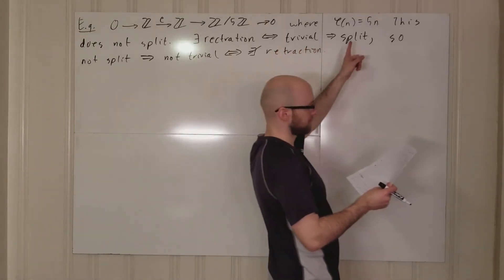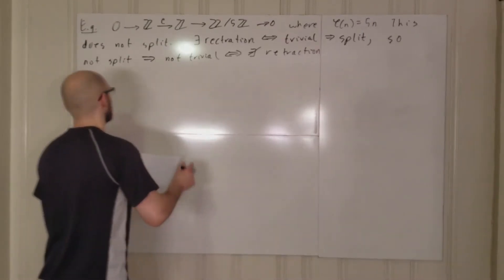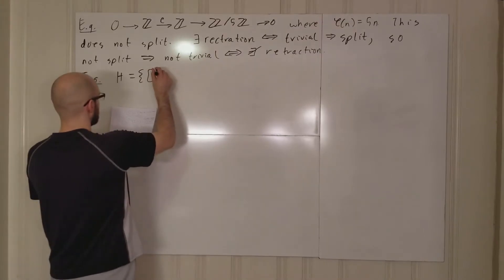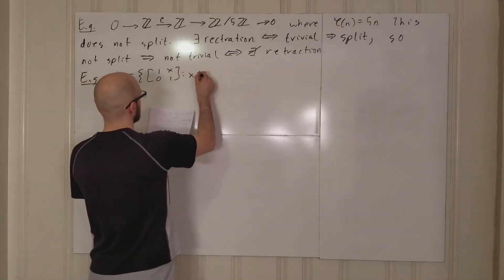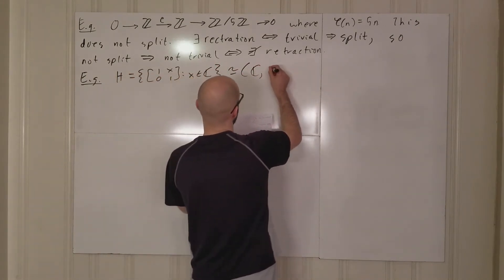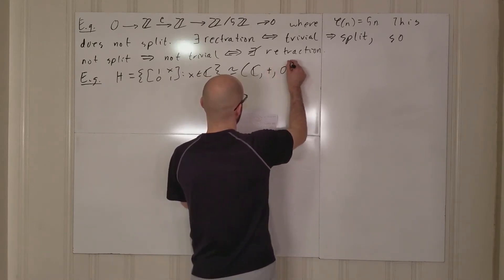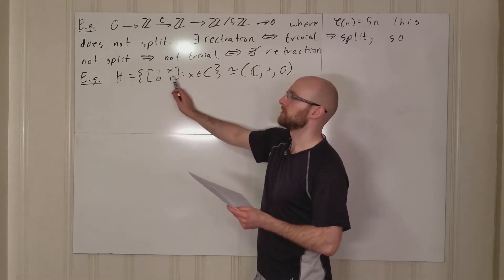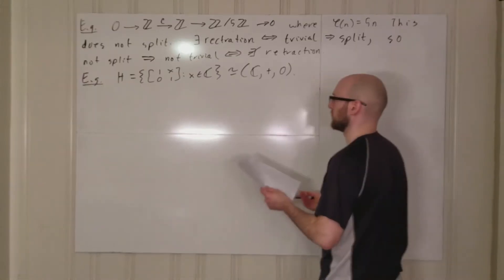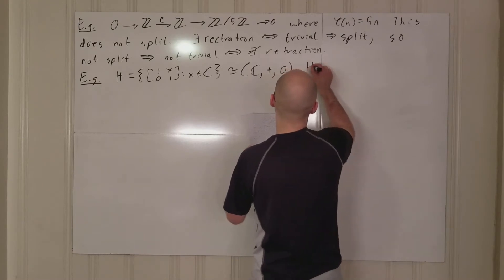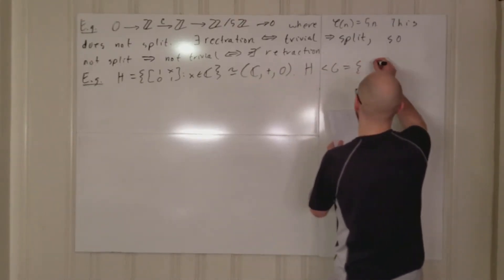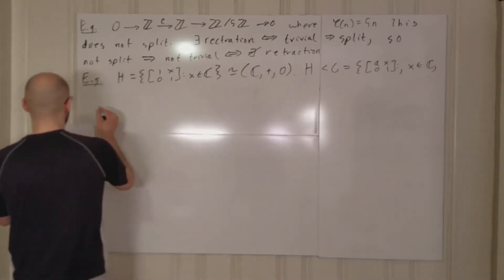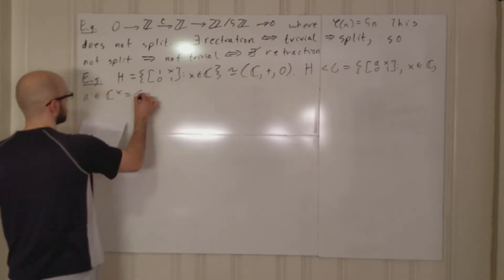We have trivial implies split, but what about the other direction? To investigate that, let's look at another example. Let H be the collection of matrices of the form [1, x; 0, 1] where x is in C. This is isomorphic to the additive group of complex numbers, because if you multiply [1, x; 0, 1] by [1, y; 0, 1] you get [1, x+y; 0, 1].